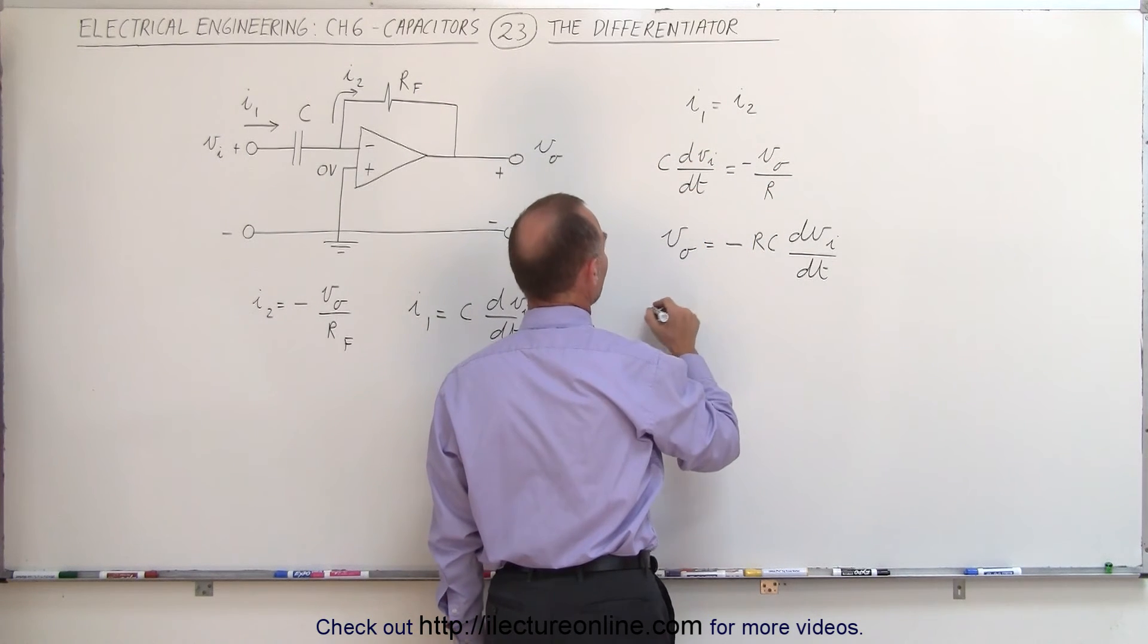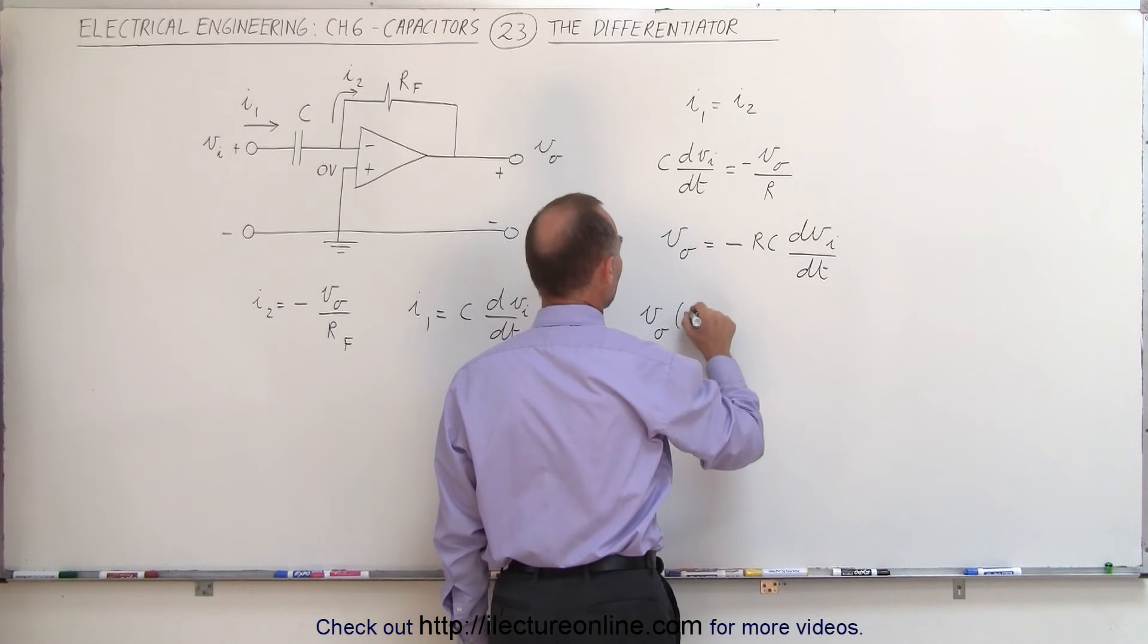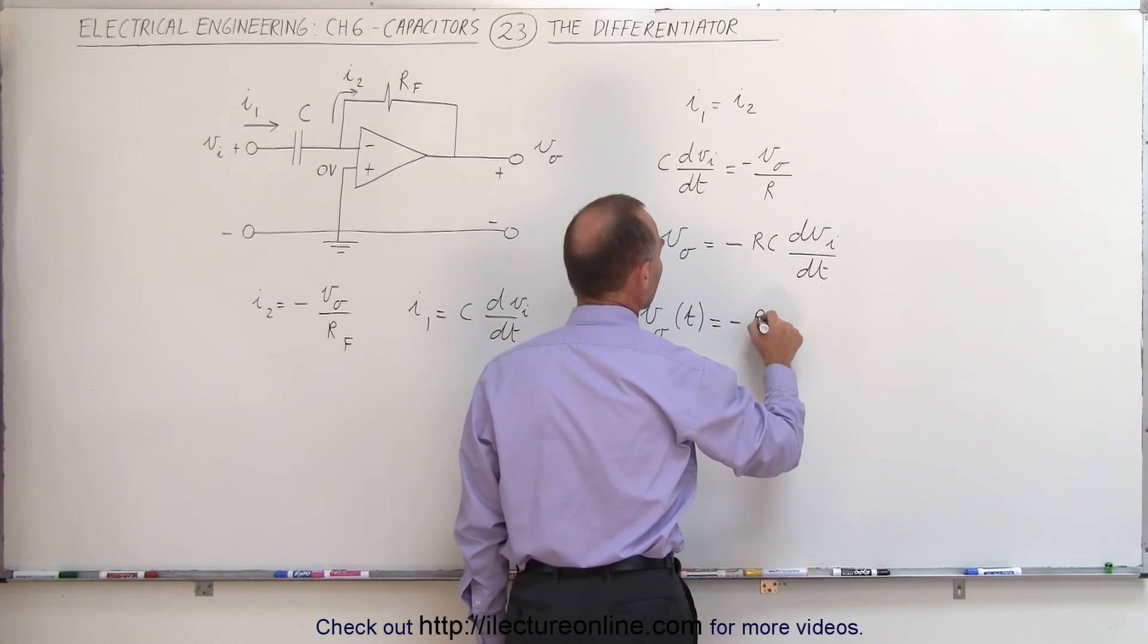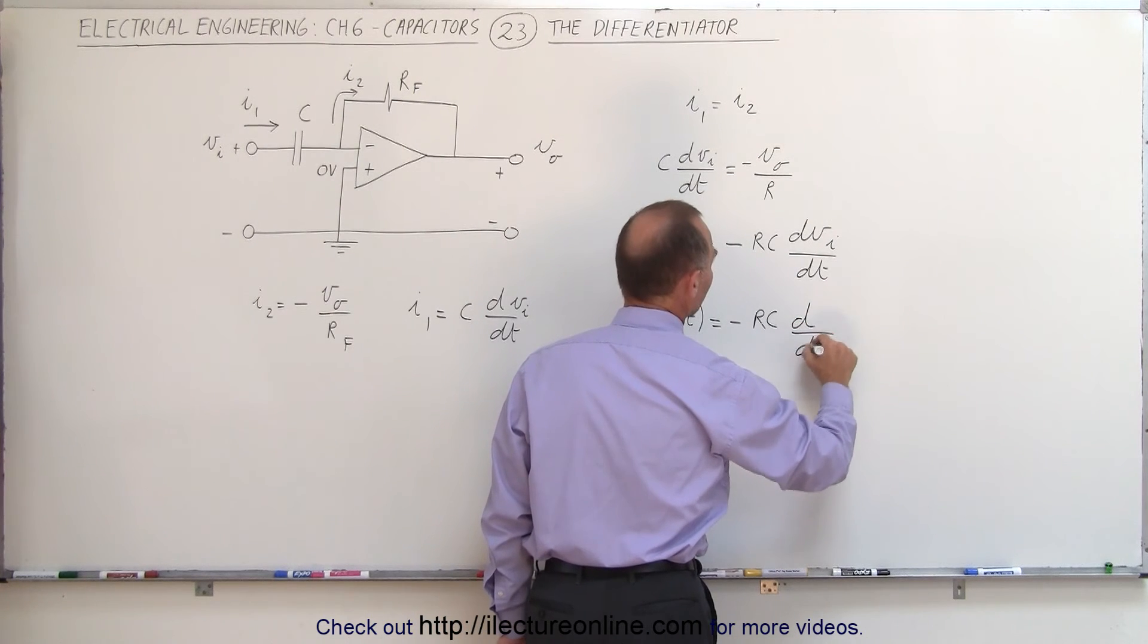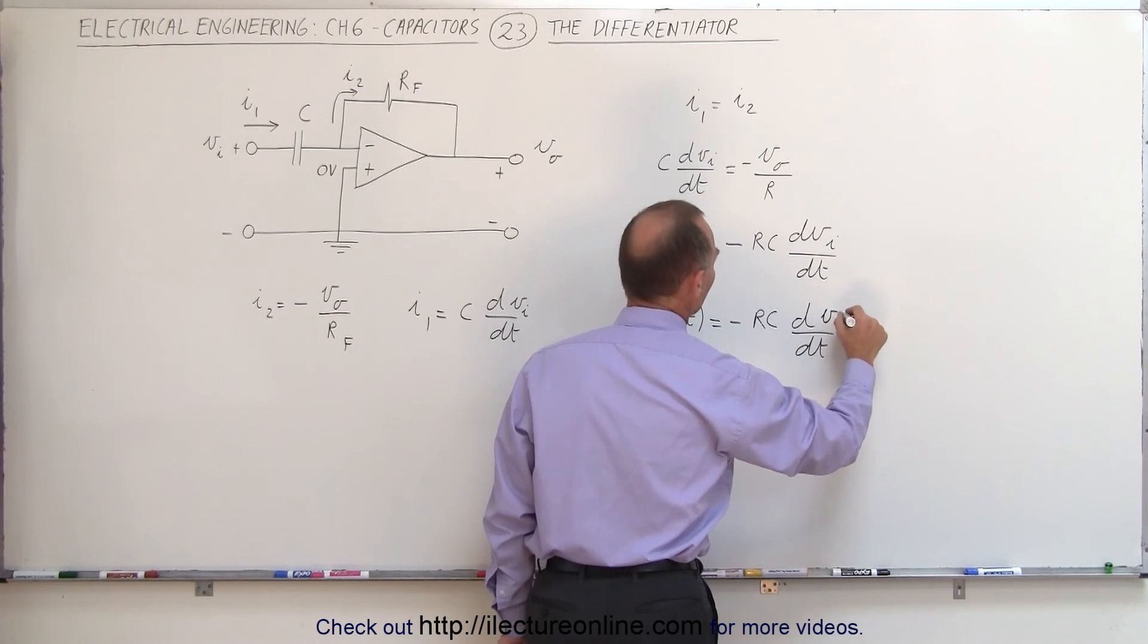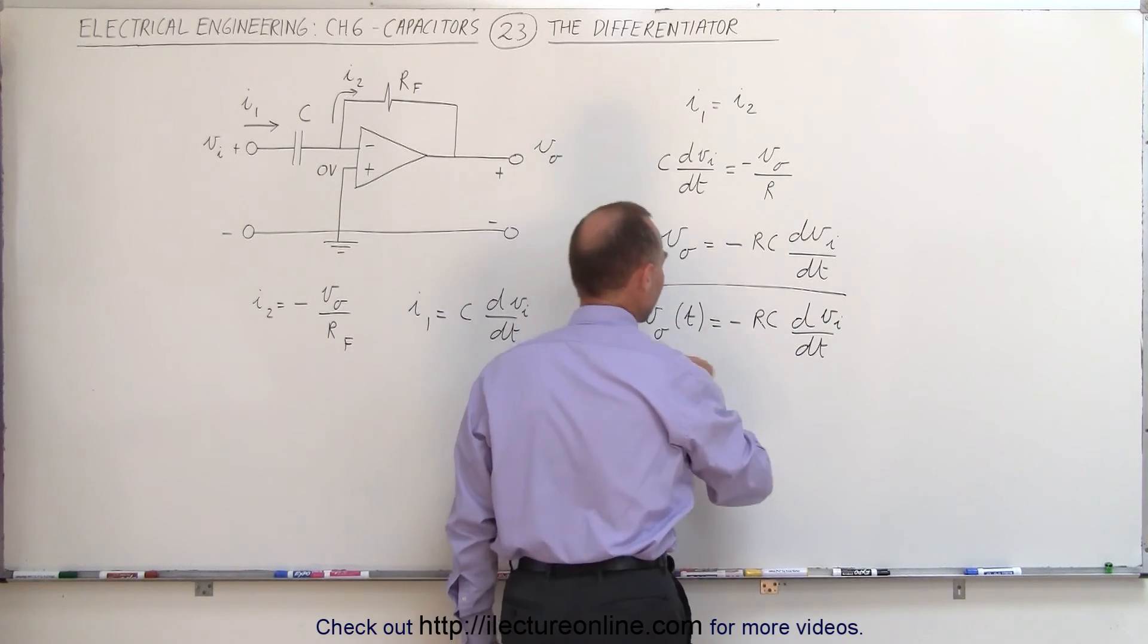And here we can see that the output voltage, which is indeed a function of time, is equal to minus the time constant, R times C, times the derivative with respect to time of the input voltage. And of course, that's also a function of time.